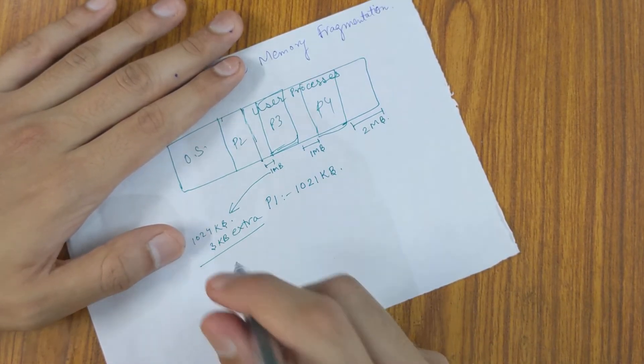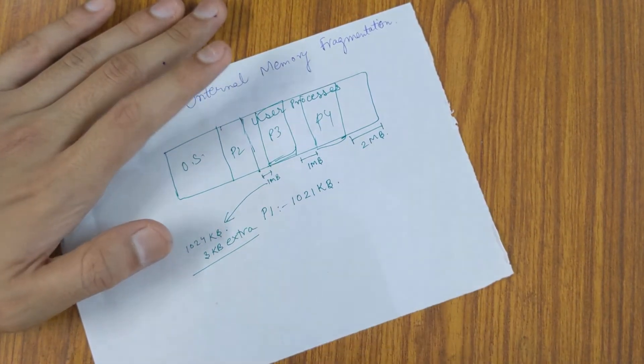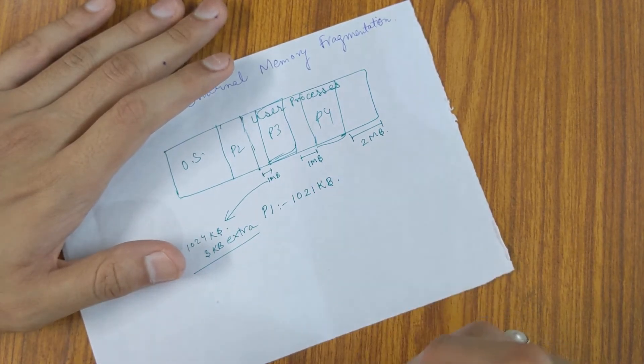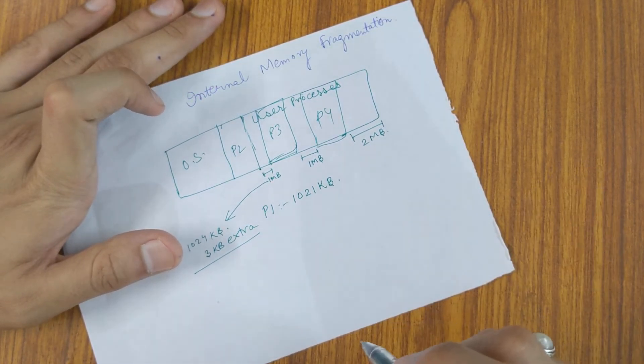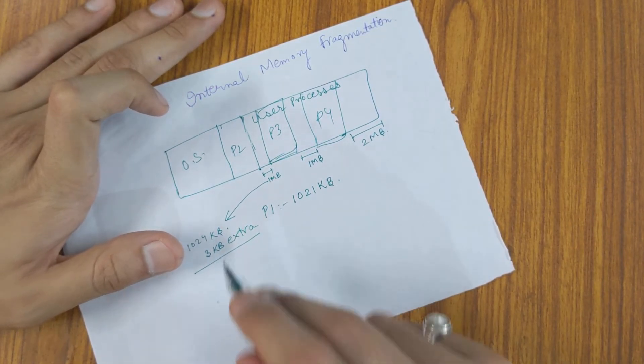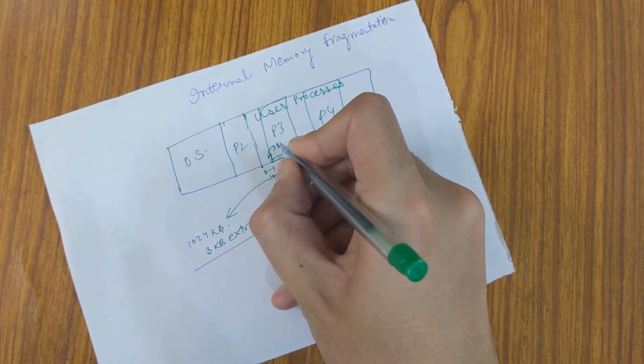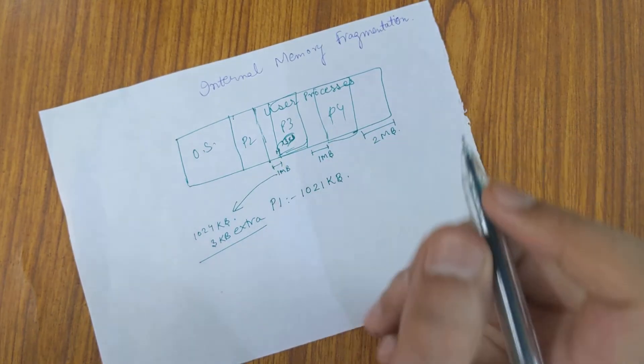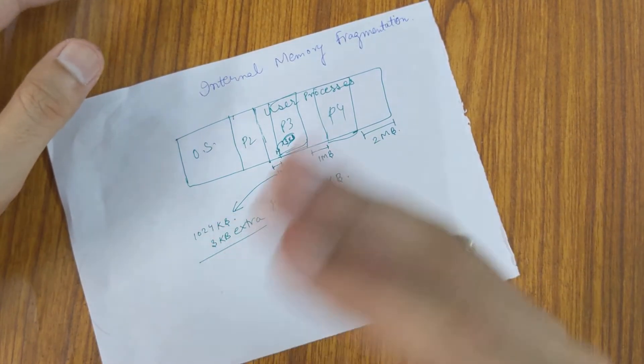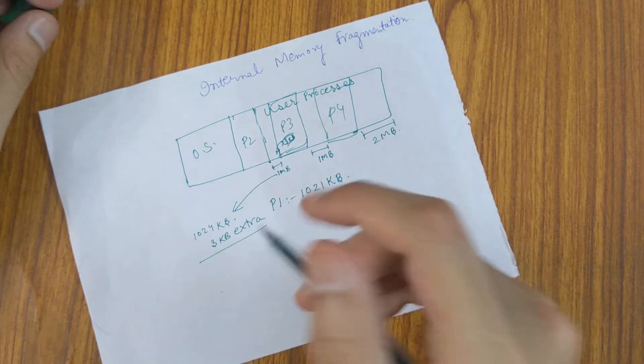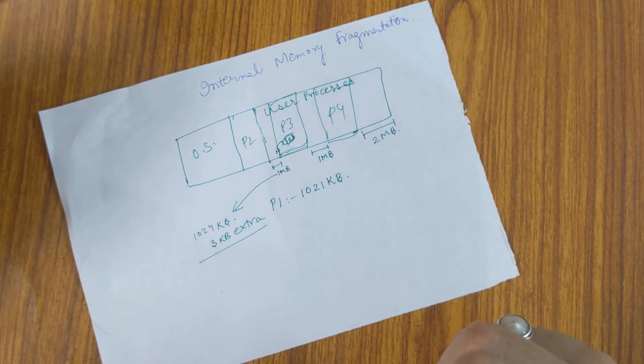Now we can allocate the exact amount of memory which is required that is 1021 KB but in that case we need to keep track of this 3 KB remaining. So, this very small hole here, 3 KB hole, we have to keep track of that and it will be costlier than allocating the whole 1024 KB to it.